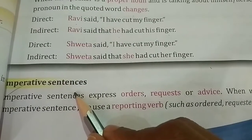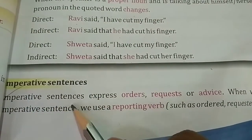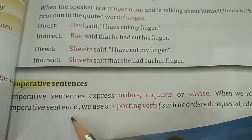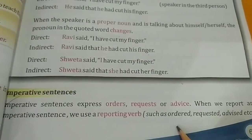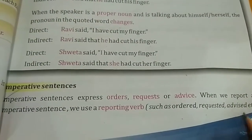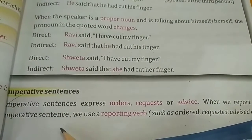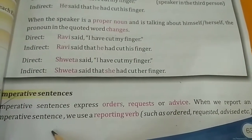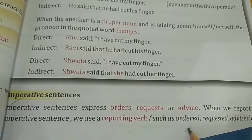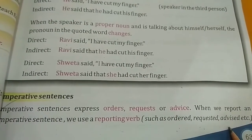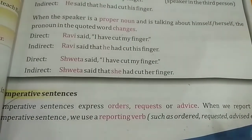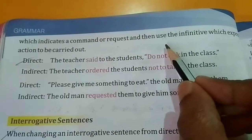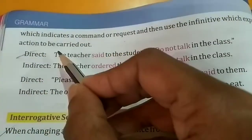Next, imperative sentences. Imperative sentences express orders, requests, or advice. When we report an imperative sentence, we use a reporting verb such as ordered, requested, advised, etc., depending upon the sentence, which indicates a command or request, and then use the infinitive which expresses the action to be carried out.